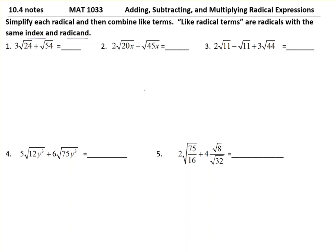What that means is if I had something like 2√2 plus 3√2, they're both square root and what's under the radical is also the same. So as of right now these two do not match.